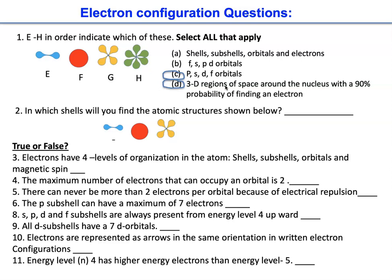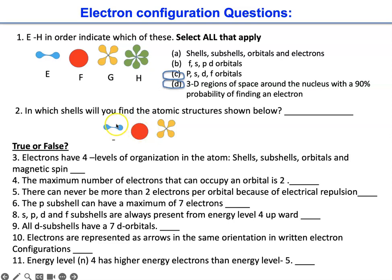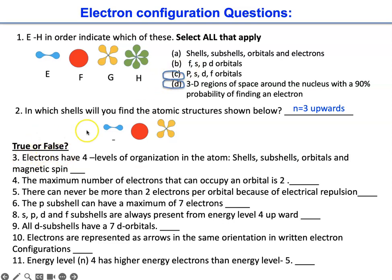Question 2: which shells will you find the atomic structures shown? The S orbital starts in energy level 1. The P orbital starts in energy level 2 and every level after. The D orbital starts in energy level 3 and every level after — energy level 3 upwards. Question 3: electrons have four levels of organization in the atom — shells, subshells, orbitals, and magnetic spin. That is true.